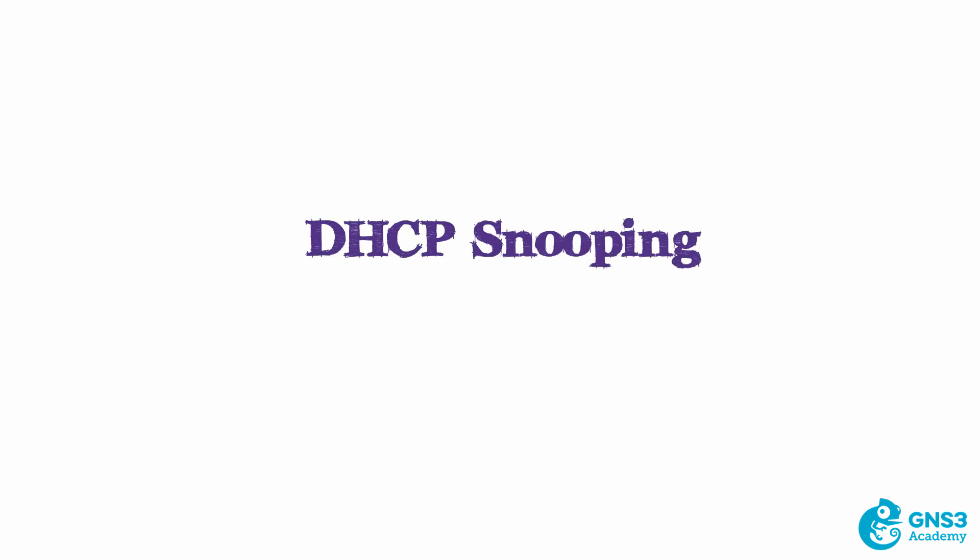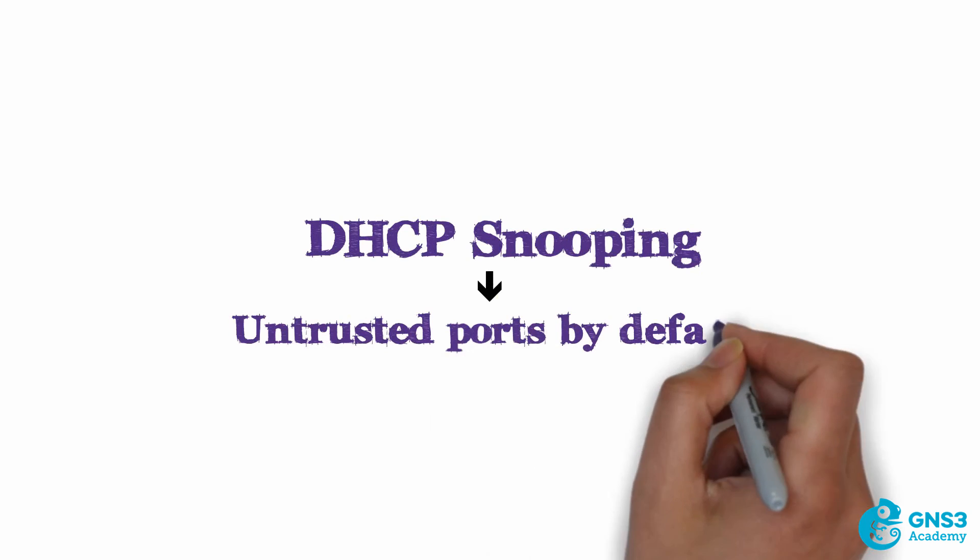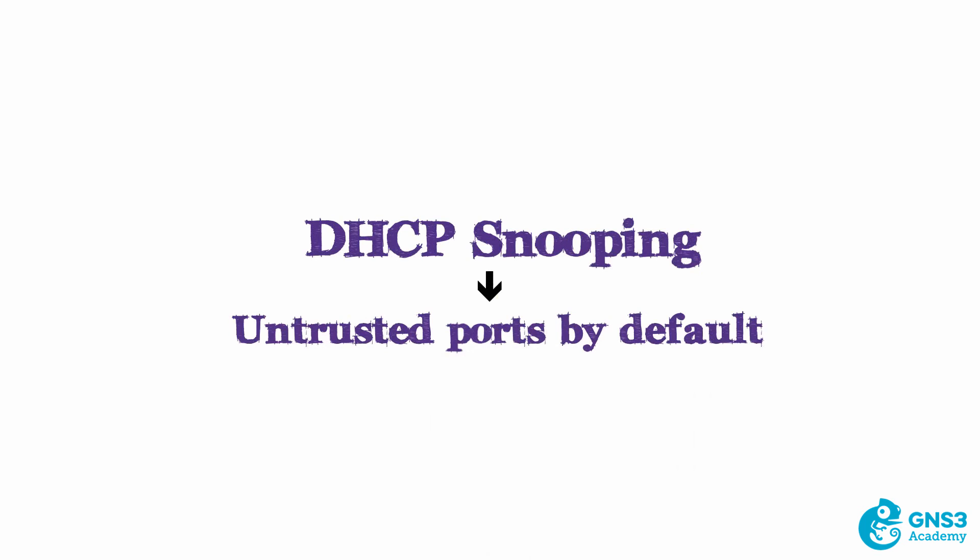DHCP snooping configures all ports as untrusted ports by default — you have to explicitly configure which ports are trusted. In other words, if you have a trusted DHCP server on gigabit 0/0, you need to configure that port as a trusted port so that DHCP snooping allows offers from that server.